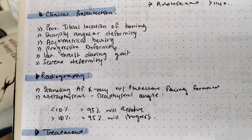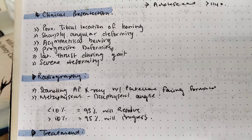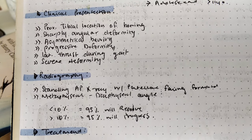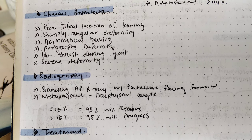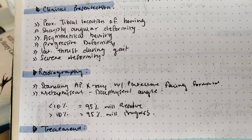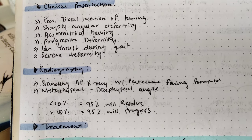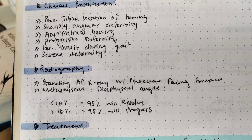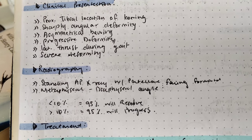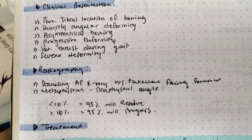On radiography, you perform a standing AP (anterior-posterior) x-ray with the patella facing forward. You measure the metaphyseal-diaphyseal angle. If it is less than 10 degrees, 95% of cases will resolve without further medical intervention. If the metaphyseal-diaphyseal angle is greater than 10 degrees, 95% of cases will progress and need further treatment.